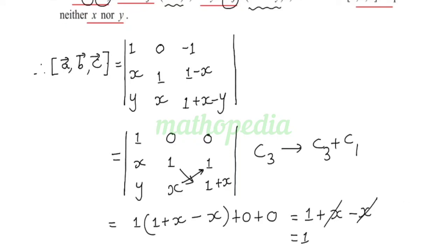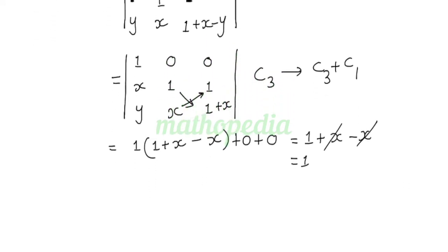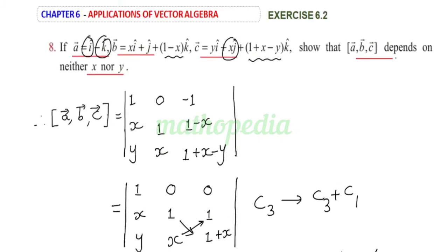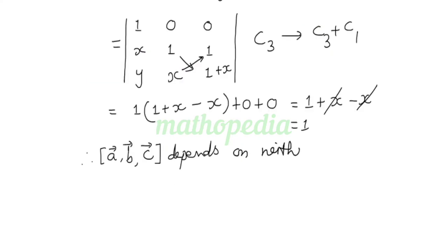Since we don't have X and Y terms in the answer, we can say that the box product of A, B, C depends neither on X nor on Y.